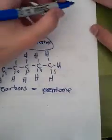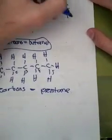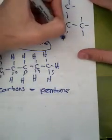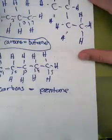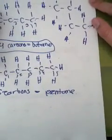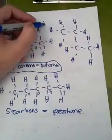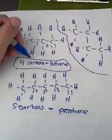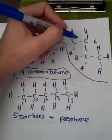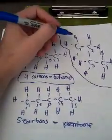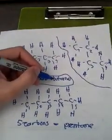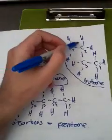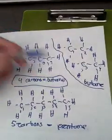Let me ask you a quick question. What would this molecule be called? Hopefully you've been able to comprehend what I've been saying, because all there is to it is count how many carbons there are. Four carbons — butane. And that's absolutely correct. It does not matter that it has been rearranged. As long as the carbons are connecting to each other, four carbons equals butane.